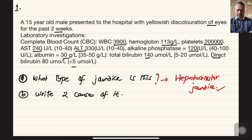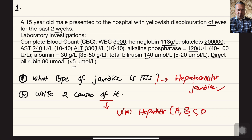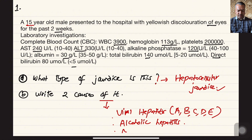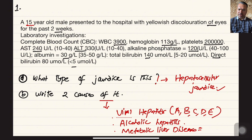Two causes for hepatocellular jaundice: first, viral hepatitis — from A, B, C, D, E, and even G these days. Second, alcoholic hepatitis — less likely here as the patient is only 15 years old, though we cannot ignore it. Another cause is metabolic liver disease, such as Wilson disease, alpha-1 antitrypsin deficiency, hemochromatosis, and cystic fibrosis.